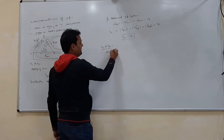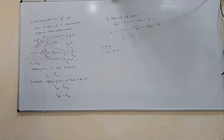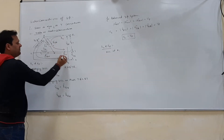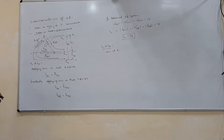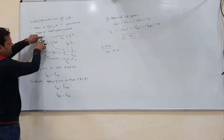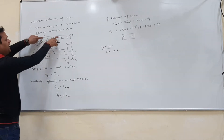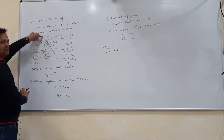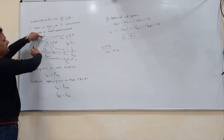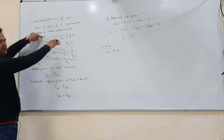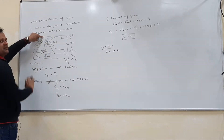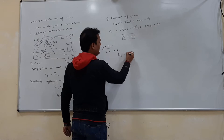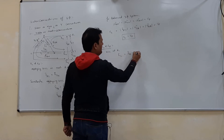Applying KCL at node A: all are AC quantities so we keep the bar notation. IR is incoming, IY is outgoing, and IL1 is outgoing. Taking the algebraic sum of incoming and outgoing currents: IR minus IY minus IL1 equals zero, so IL1 equals IR minus IY.